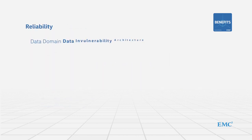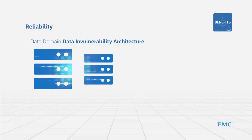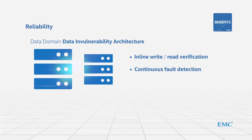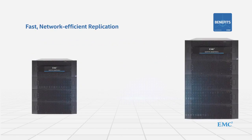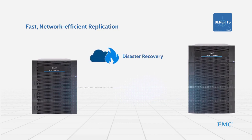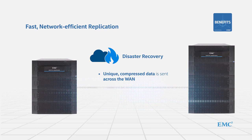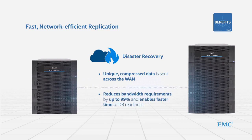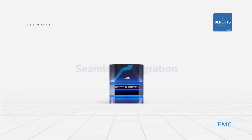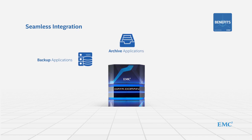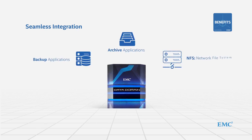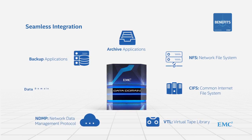For reliability, the Data Domain Data Invulnerability Architecture provides the best defense against data integrity issues through inline write-read verification, continuous fault detection, and self-healing. For fast, network-efficient replication, when Data Domain replicates data to a second Data Domain system for disaster recovery, only unique, compressed data is sent across the WAN. This reduces bandwidth requirements by up to 99% and enables faster time to DR readiness. Data Domain can be integrated into any customer environment, supporting leading backup and archive applications, as well as a broad range of protocols such as NFS, CIFS, VTL, NDMP, and DDBoost.